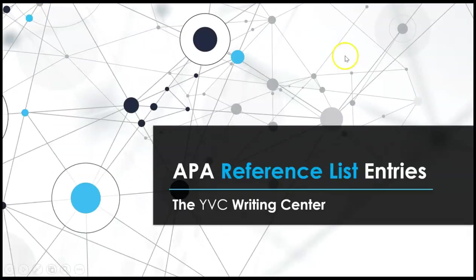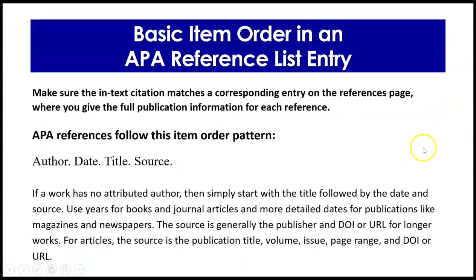On with the show — we know everyone's busy working on papers, homework, life, and work, so we'll make this super quick. APA Reference List Entries: the basic item order in an APA Reference List Entry. Make sure the in-text citation matches a corresponding entry on the references page where you give full publication information. APA references follow this item order pattern: author, period, date, period, title, and then source.